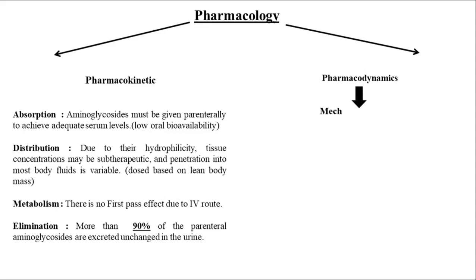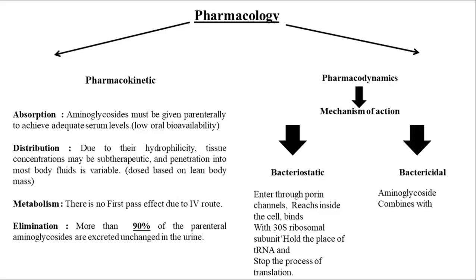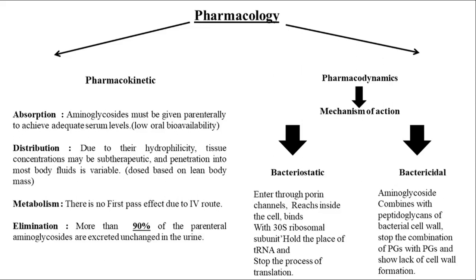Now let's talk about pharmacodynamics — the mechanism of action. There are two types: bacteriostatic and bactericidal. In bacteriostatic action, the drug enters through channels and reaches inside the cell, where it binds with the 30S ribosomal subunit, occupies the place of transfer RNA, and stops the process of translation. In bactericidal action, aminoglycosides combine with peptidoglycans of the bacterial cell wall, inhibit cell wall formation, and without a cell wall the bacteria die.